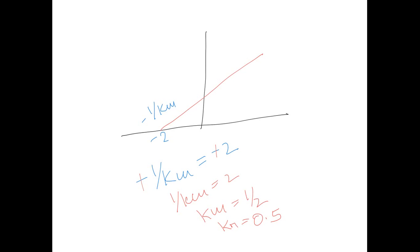So the Km for this question is 0.5 and that 0.5 will have a unit of substrate, whatever the substrate concentration it can be micromoles, millimoles, picomoles or molar. Now how to find out Vmax for this particular Lineweaver-Burke plot?